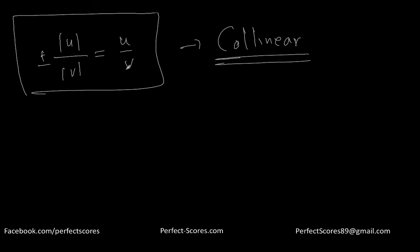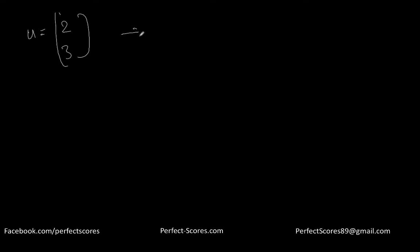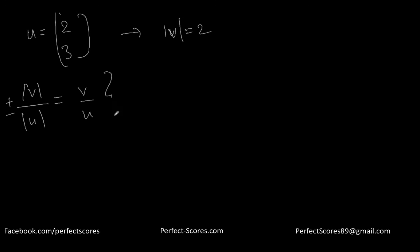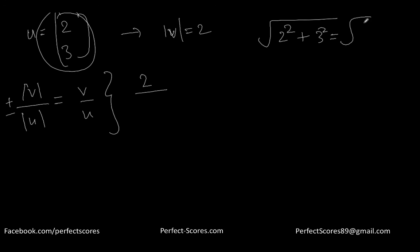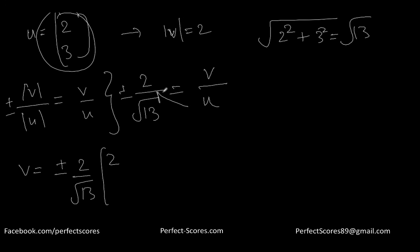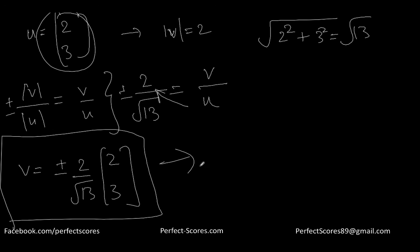Let's do another example. We have vector u = (2, 3) and want to find a collinear vector with magnitude 2. The magnitude of u = √(4 + 9) = √13. Using the formula: magnitude of v / magnitude of u = ±v/u, so v = ±(2/√13) · (2, 3). This gives two possible vectors, both with magnitude 2 and parallel to (2, 3).